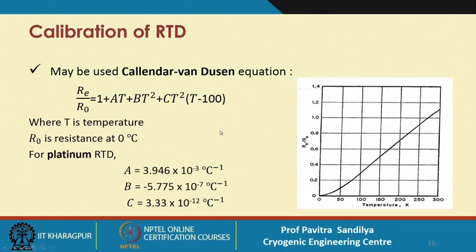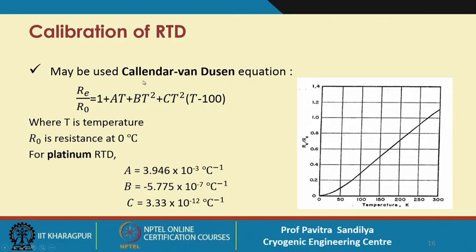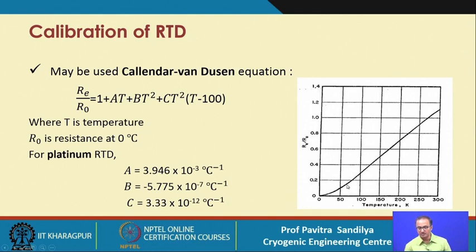For calibration of RTDs, resistance is calibrated against temperature — unlike thermocouples where EMF versus temperature is used. The Callendar-Van Dusen equation is commonly used for platinum RTDs, with ABC coefficient values given. R₀ is the resistance at 0°C. The calibration curve shows resistance on the y-axis and temperature on the x-axis, and for most of the range of interest — from very low temperature around 70 K up to about 300 K — the relationship is nearly linear.